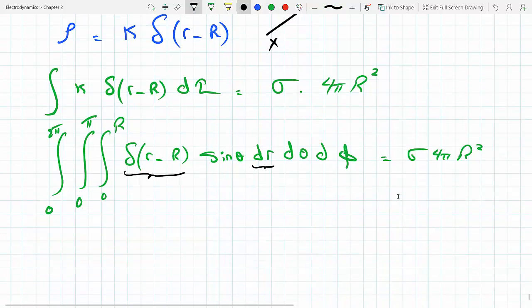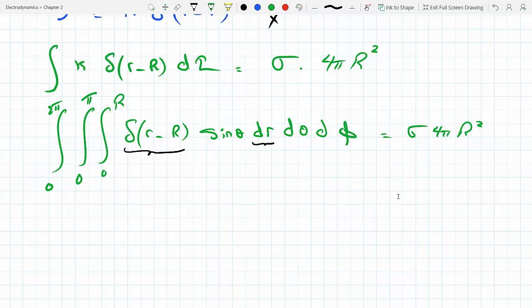Okay, now notice this integral will get me, oh I forgot the R² by the way, there's an R² here. It's R² sine theta. So if I take the black part, this is just going to give me the value of the function f of R, which is R² evaluated at R equal capital R, so the black part will just give me R².